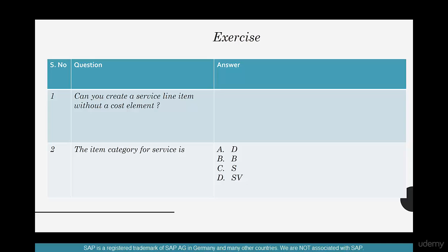The item category for service is which one of these: A. D, B. B, C. S, or D. SV? Well, I can rule this out because item categories are just single character, but between D, B, and S, what is an item category for service?